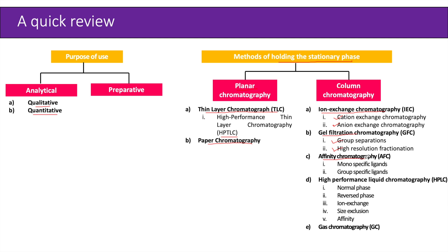Affinity chromatography may use monospecific ligands for separation of a single substance or group-specific ligands for separation of structurally or functionally similar substances. High performance liquid chromatography may be normal phase (polar stationary, non-polar mobile), reversed phase (non-polar stationary, polar mobile), or high performance ion exchange, size exclusion, or affinity chromatography. Gas chromatography concludes the overview of chromatographic separation techniques.